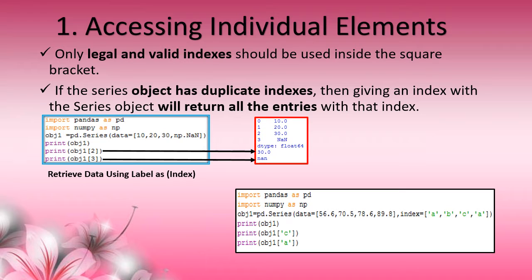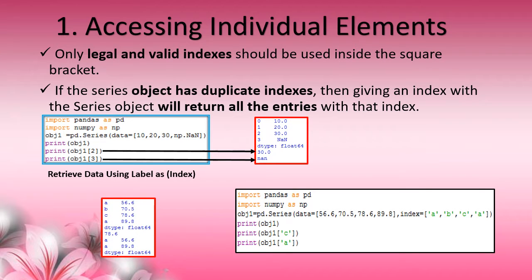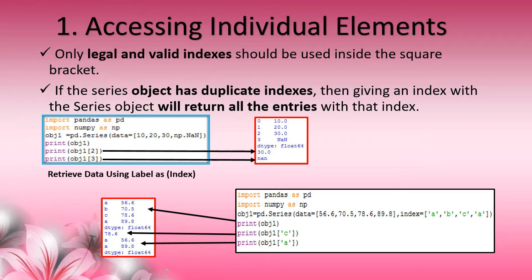In the first example, index labels are not given, so by default positions 0, 1, 2, 3 are used. Next, we assign index labels A, B, C, A to the object1 Series data. We print object1['C'] — C label corresponding value 78.6 is printed. And object1['A'] — here there are two A indexes, so both entries are displayed along with the index.